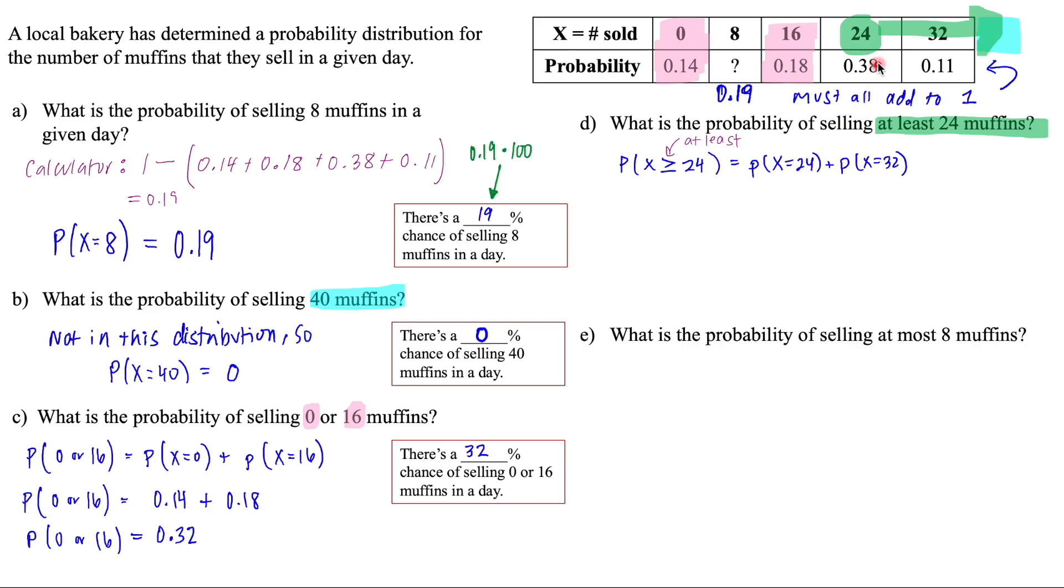So at least means that I could have 24, it could be 24 and it could be anything after that. So in our probability distribution, we only have 24 and 32.